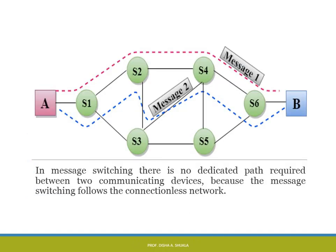As you can see in the figure, in message switching the whole message is stored at particular switches and then transmitted onward. There is no dedicated path required between the two communicating devices because message switching follows a connectionless network.